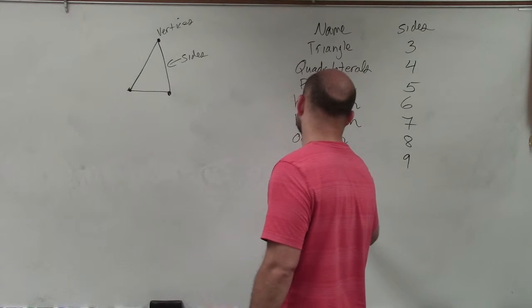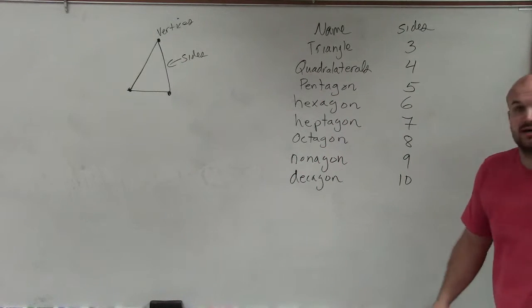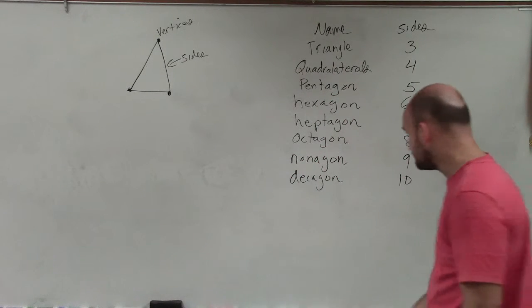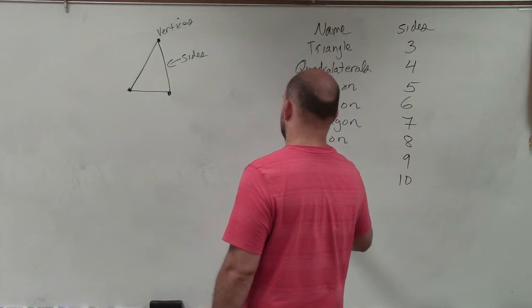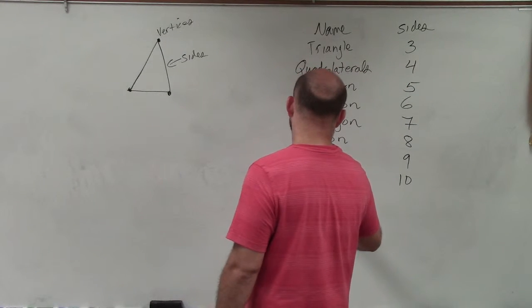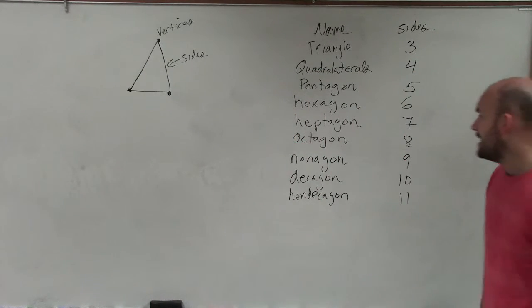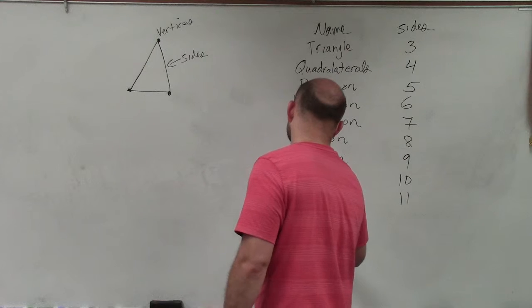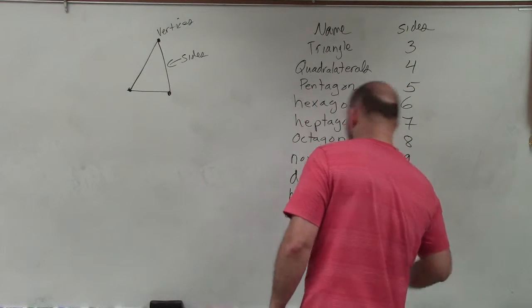We have a decagon that is going to be a polygon with 10 sides. We have a hendecagon that is going to be one with 11 sides. And we also have a dodecagon and that is going to be one with 12 sides.